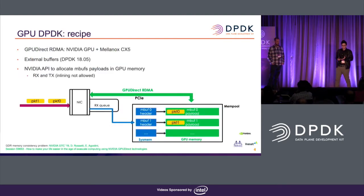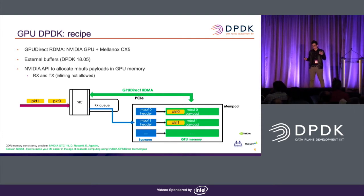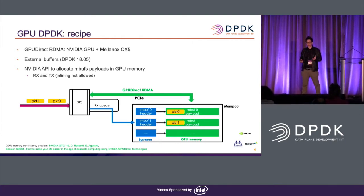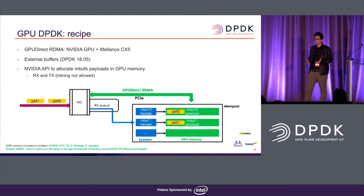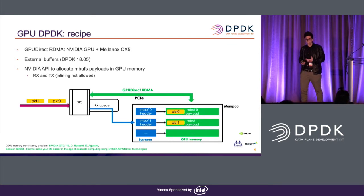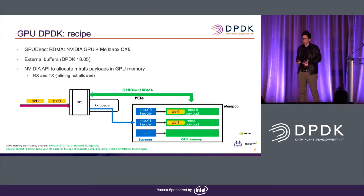GPU DPDK is composed of two main elements: GP Direct RDMA and the external buffer feature introduced in DPDK since release 1805. Basically, GPU DPDK introduces a set of NVIDIA APIs to create a mempool where the MBUF headers are in system memory — which can also be pinned so the GPU can reach them — and the MBUF payload is in GPU memory.